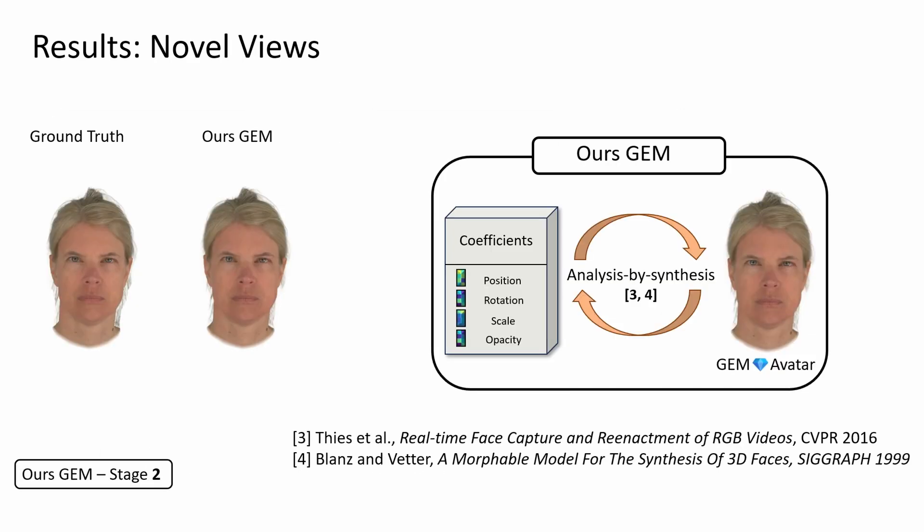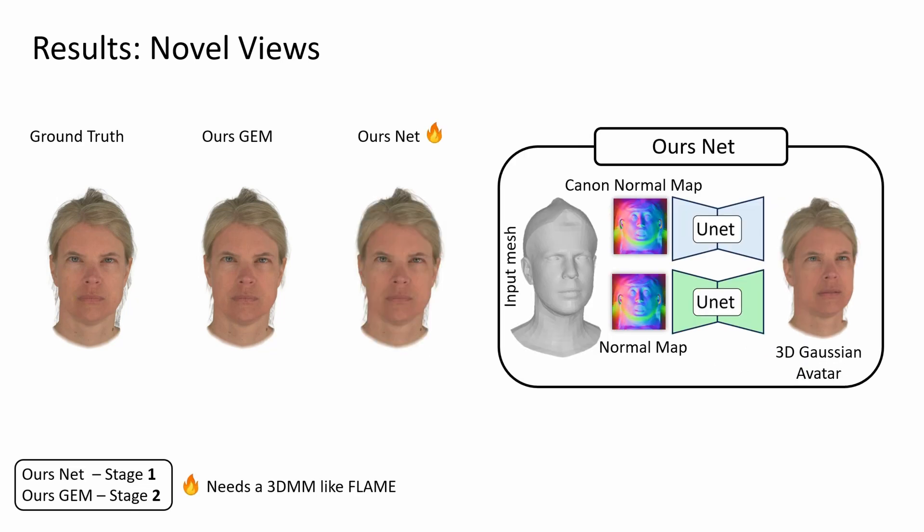We evaluated our method for each of the two stages separately. For the second stage, we optimize PCA coefficients using an analysis-by-synthesis approach. Based on the measures provided by the NeRF sample dataset, we evaluated the first stage — the CNN network output. Both stages achieve state-of-the-art results.